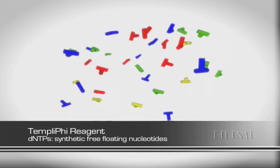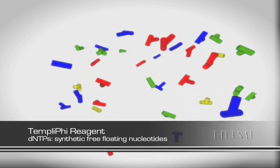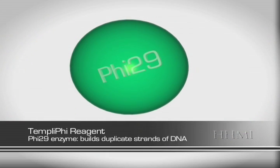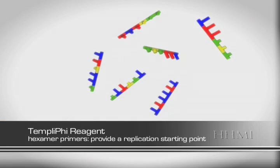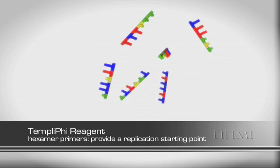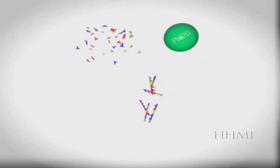The templify reagent consists of DNTPs, which are synthesized free nucleotides, the enzyme that builds the duplicate strands of plasmid DNA, and random hexamer primers, which give the phi-29 polymerase a starting point on the plasmid to start the replication process.